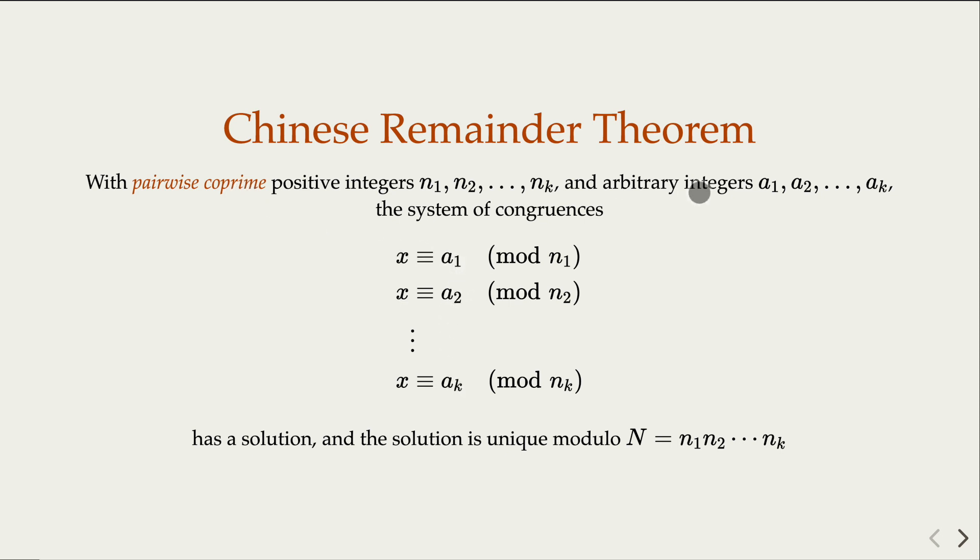The Chinese Remainder Theorem claims that this system of equations always has a solution, and the solution is unique with respect to the modulus of big N, which is a product of the n₁, n₂, and nₖ.